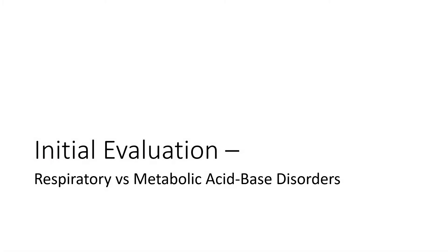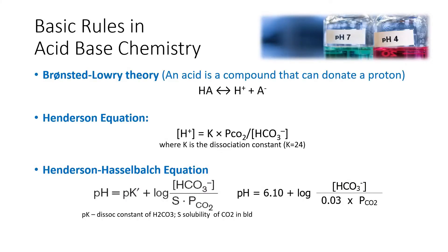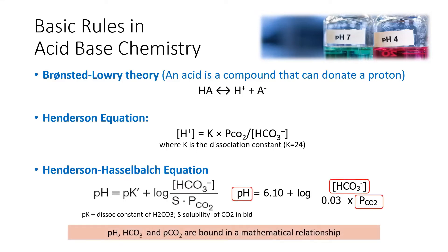We go on next to the initial evaluation of acid-base disorders. These are very familiar basic rules in acid-base chemistry: the Bronsted-Lowry theory, the Henderson equation, and the Henderson-Hasselbalch equation. The most important thing to note in the Henderson-Hasselbalch equation is that pH, bicarbonate, and pCO2 are all bound in a very strict mathematical relationship, and they cannot deviate from this equation.